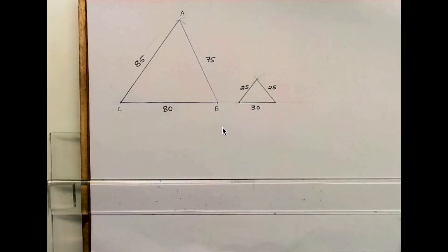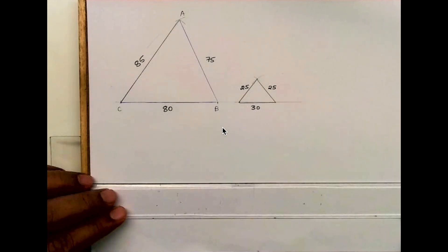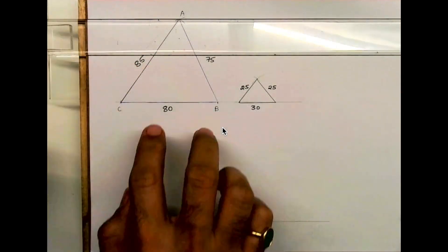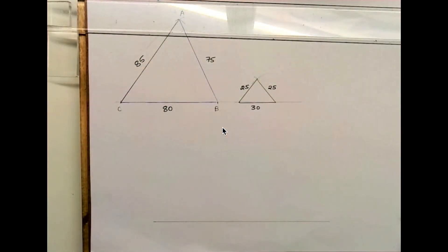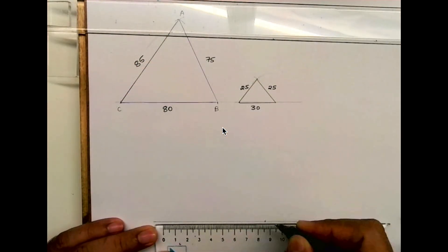Welcome to technical drawing. Today we'll see how to convert two triangles into one triangle. First, we'll see the triangle. Always find out the maximum side. In this case it's 85.